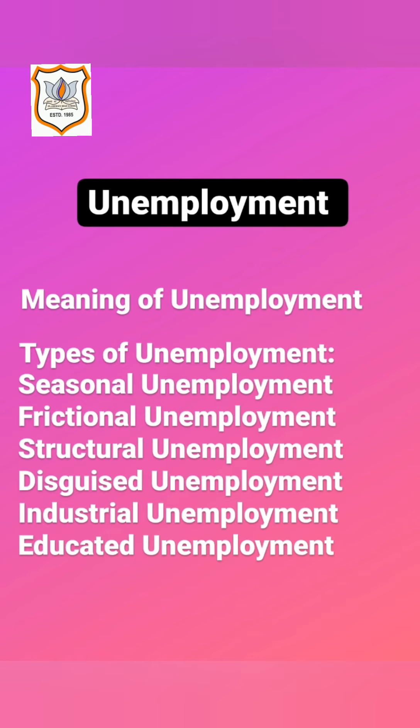Now let's understand the types of unemployment. The first type is seasonal unemployment, which is found in the Indian agriculture sector due to the seasonal nature of the activity. Indian agriculture is largely dependent on the monsoon, and due to lack of irrigation, irregular rainfall, and non-availability of alternate employment sources like allied industries, farmers and farm laborers remain unemployed for three to five months and become victims of seasonal unemployment.